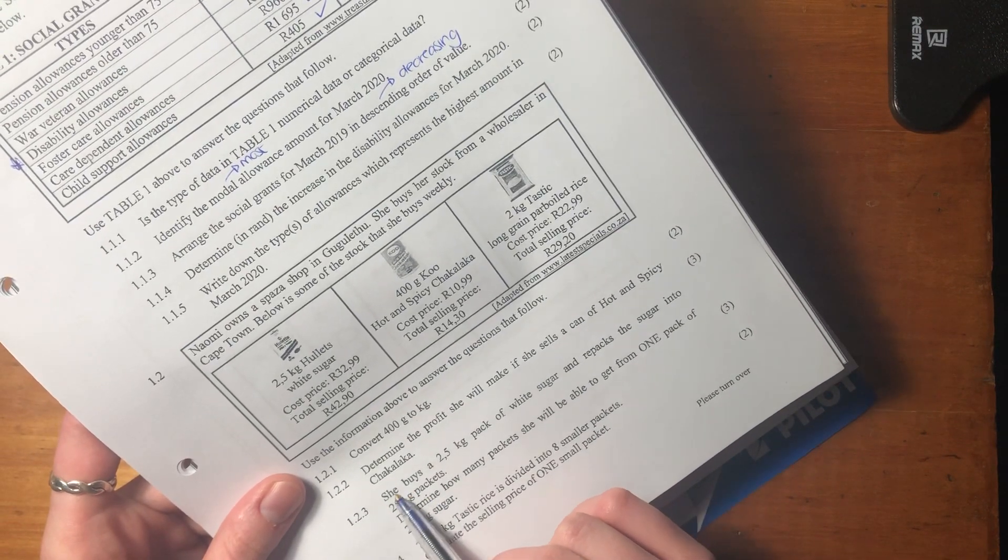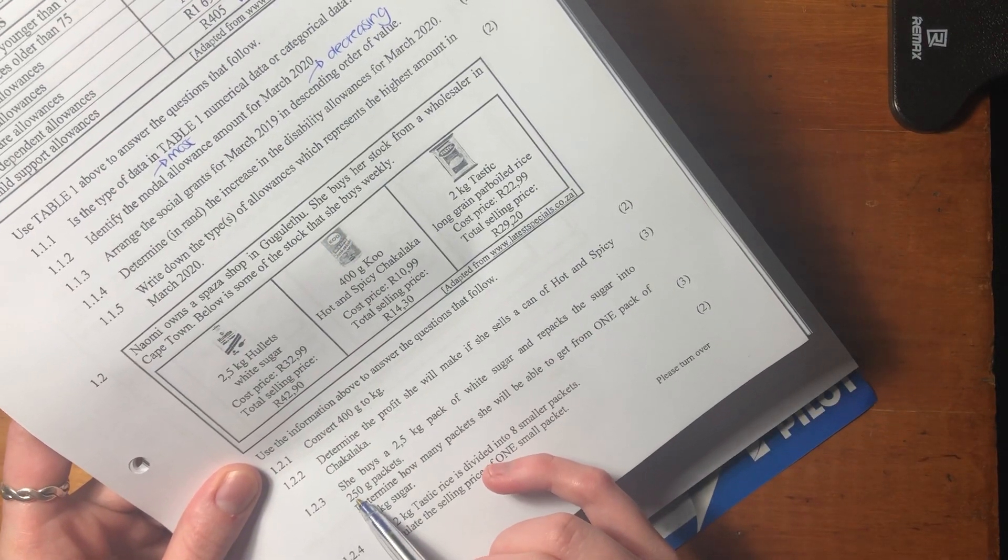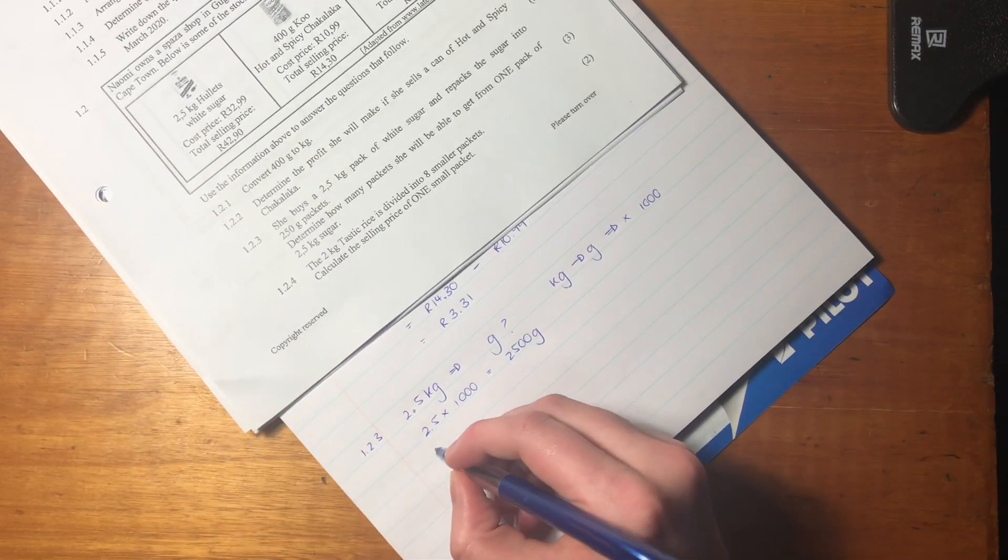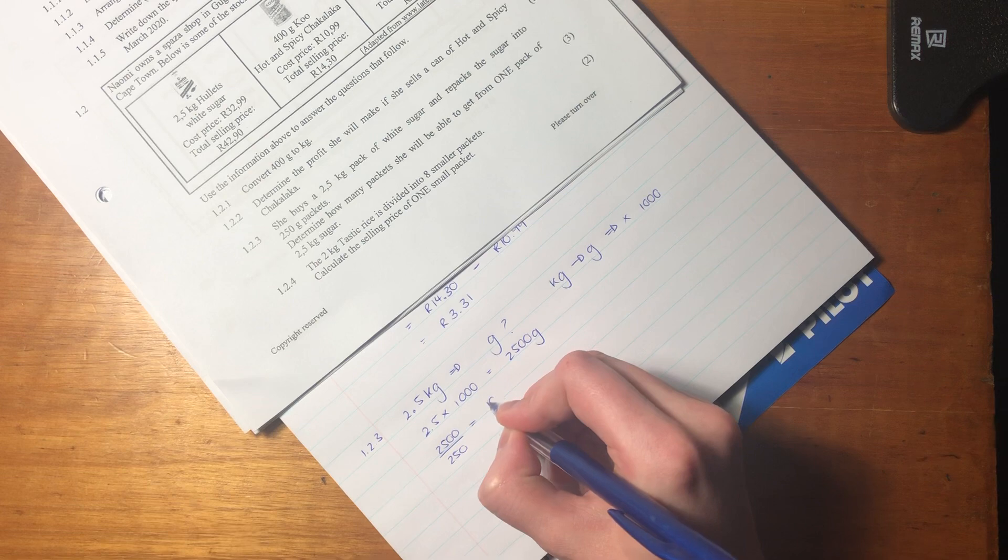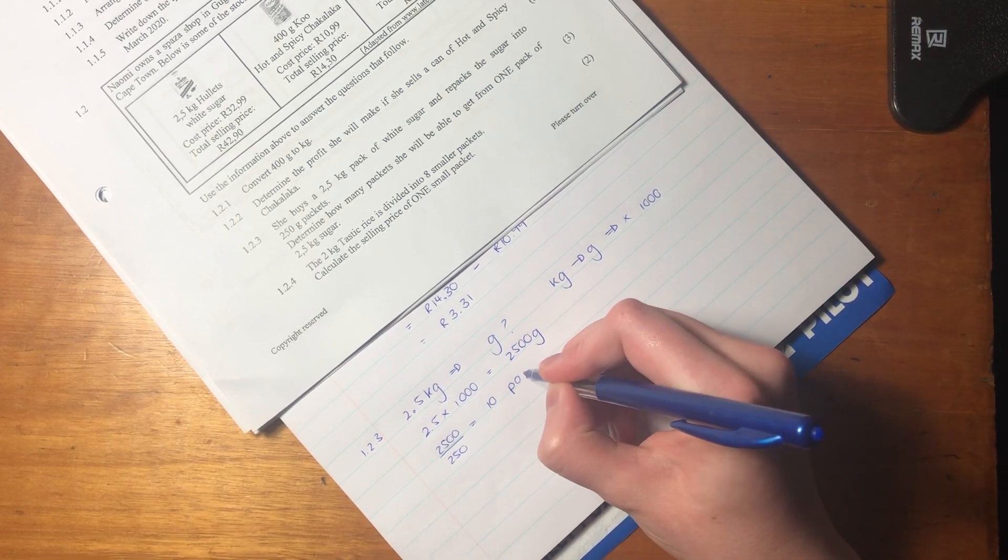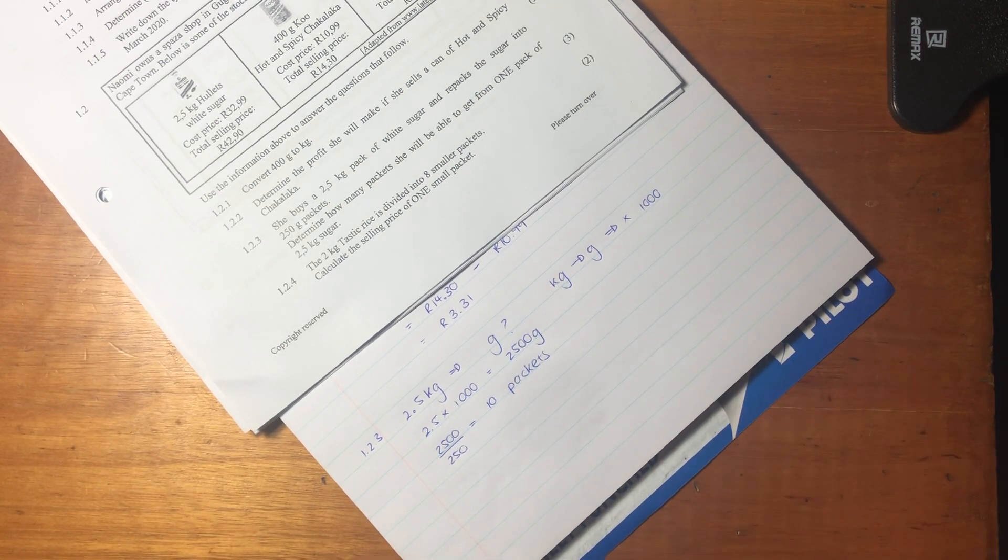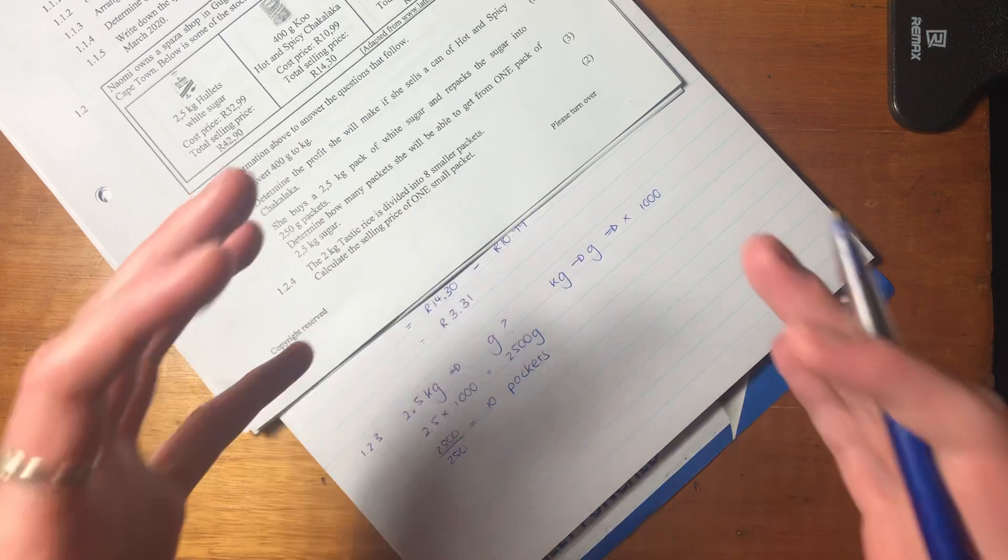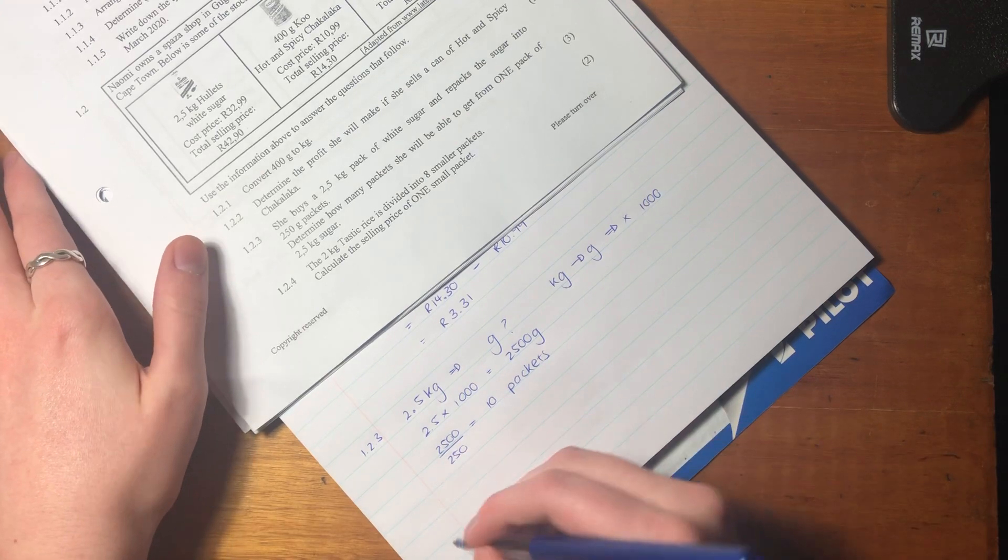Each of the smaller packets are 250 grams. We're going to say 2,500 divided by 250, and that gives us 10. If you don't believe in my answer, check it on your calculator. It is 10 packets. So one bag of sugar makes 10 smaller packets of sugar that Naomi decants. Smash that question out of the park.